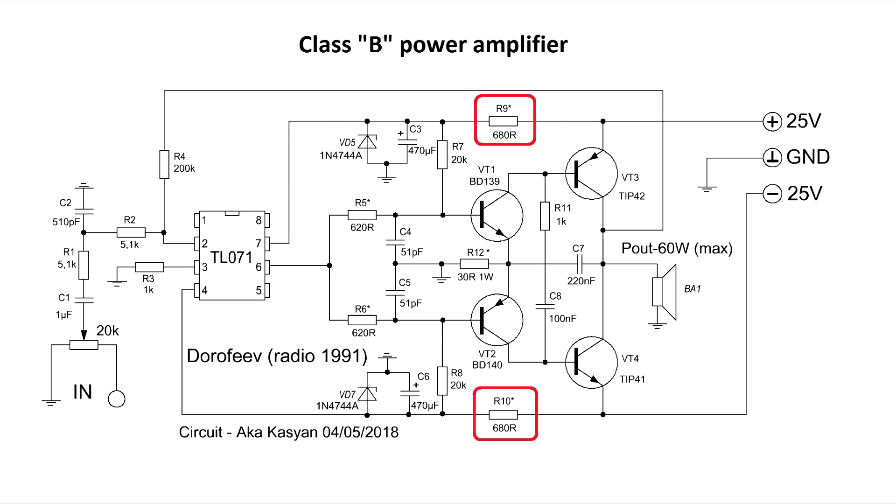Resistors R9 and R10 are selected depending on the supply voltage. They limit the current through zener diodes. In this part, a simple parametric stabilizer is assembled, which provides a stable power supply for the chip of the operational amplifier.